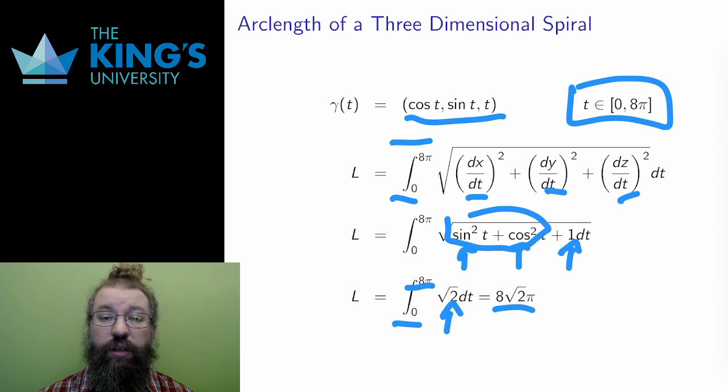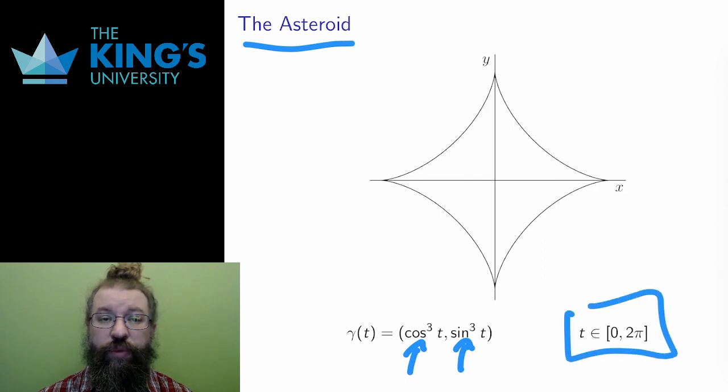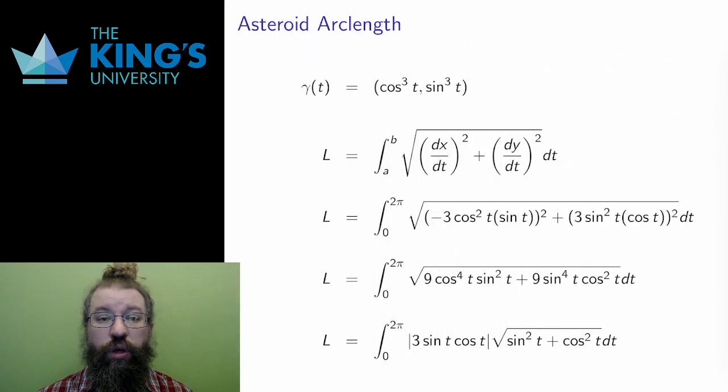I'm going to do one more example here, both to practice arc length and to show some important tricks and techniques for these types of integrals. This is a curve called the asteroid, with parameterization cos³t, sin³t, on the domain t in 0 to 2π. I set up the arc length integral by taking the two derivatives. Not showing the work, chain rule mostly, these are the derivatives. I square them to get this expression.